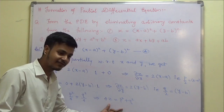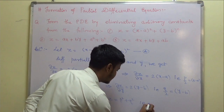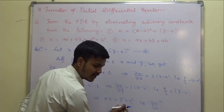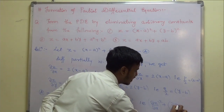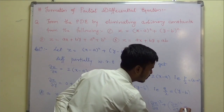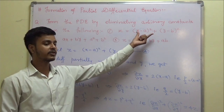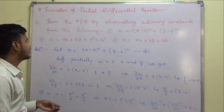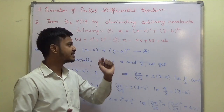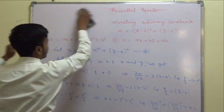If you are not comfortable with the p and q notation, you can write it as: (del z by del x) squared plus (del z by del y) squared equals 4z. This is the required partial differential equation for the first problem. I will solve one more problem and the remaining one you can solve at home.